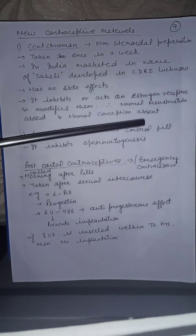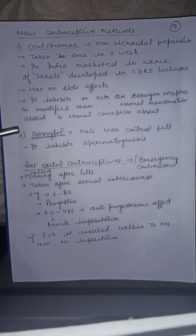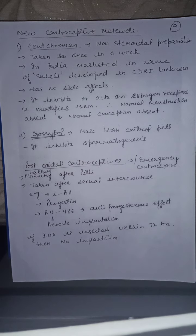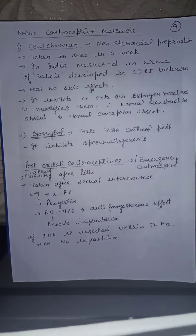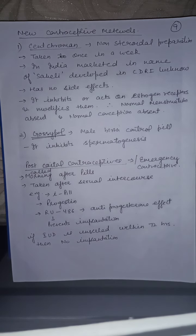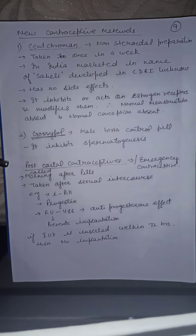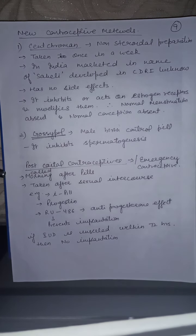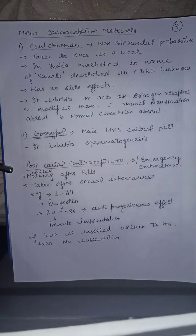Because Centchroman modifies estrogen receptors, normal menstruation is absent and normal conception will be absent. Gossypol is the male birth control pill — it inhibits spermatogenesis. Gossypol is the only male birth control pill and it is taken by males.